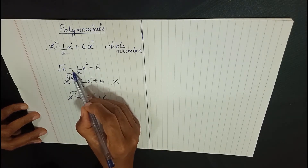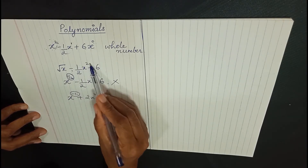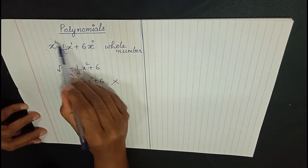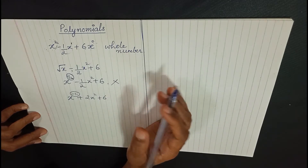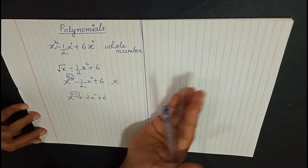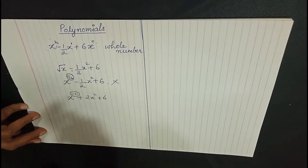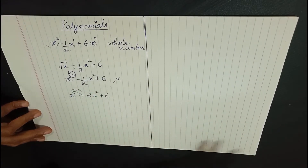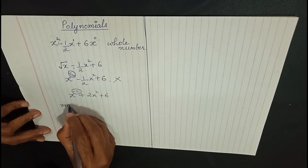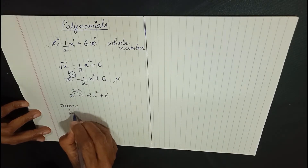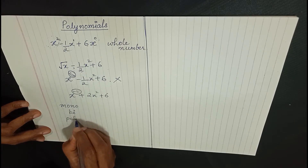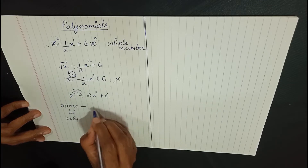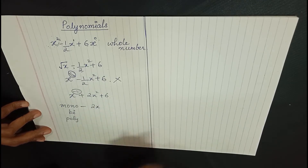You can have a negative number in the coefficients, but you cannot have it as a power. The power — that is, the degree of the variable — should be a whole number: zero or above zero. So that is what a polynomial is. Depending on how many terms are present, you can call it a monomial, binomial, trinomial, or polynomial. Mono means one — for example, 2x is just a single term.